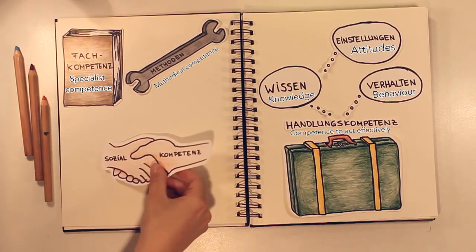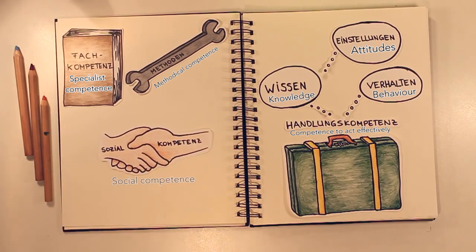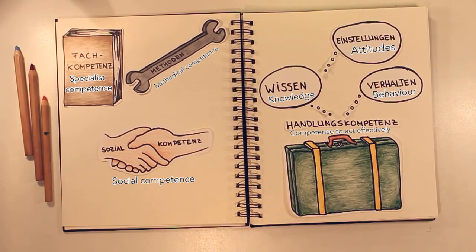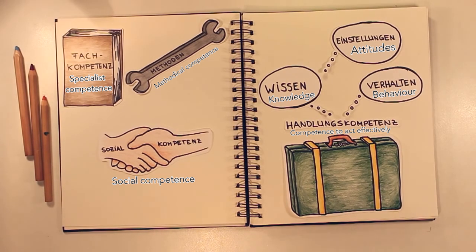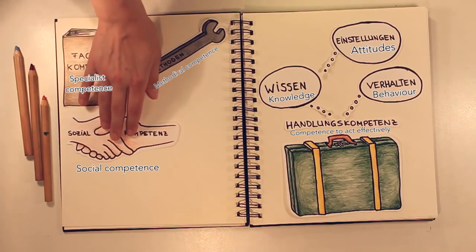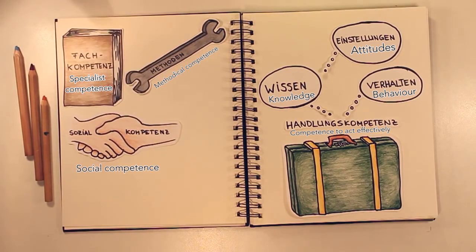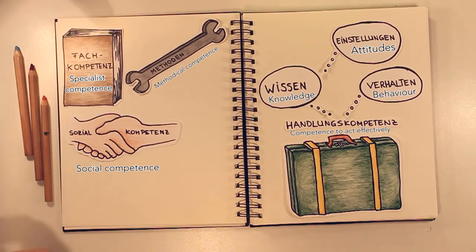There is also another important type of competence, and that is social competence. When we are socially competent, then we not only have knowledge of social rules, but are also capable of implementing these in social situations. Finally, we also have the appropriate motivation required in order to want to put our capabilities into practice within social interaction.